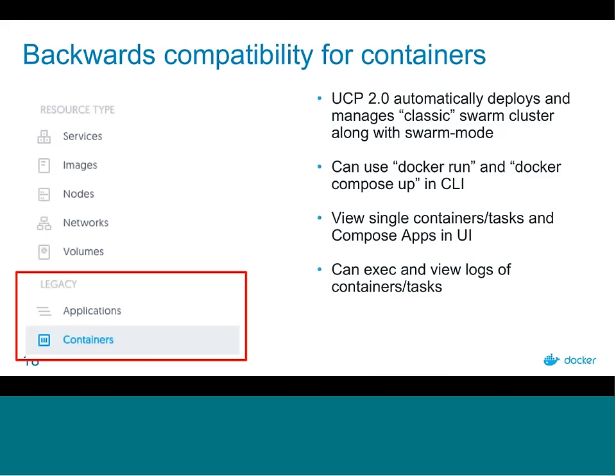In addition to docker service, we want to make sure all your existing applications function as expected. UCP 2 automatically deploys and manages the classic Swarm 1.x cluster alongside Swarm Mode — you don't have to manage this at all. You can use docker run and docker compose up in your CLI just like you used to and your commands will continue to work. You can also view single containers, tasks, and compose apps, generate compose apps based on docker run containers directly from the UI, and exec and view logs of container tasks directly from the UI.